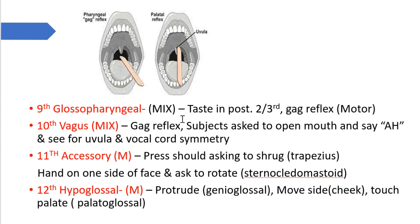The ninth nerve — glossopharyngeal — is mixed; we check taste in the posterior two-thirds of the tongue and test the gag reflex. The tenth nerve — vagus — is also mixed; the gag reflex is performed and the subject is asked to open their mouth and say 'ah' to check vocal cord symmetry. The eleventh nerve — accessory — is motor; press the shoulder and ask the subject to shrug for the trapezius muscle, and place a hand on one side of the face applying resistance and ask the subject to rotate their head for the sternocleidomastoid.